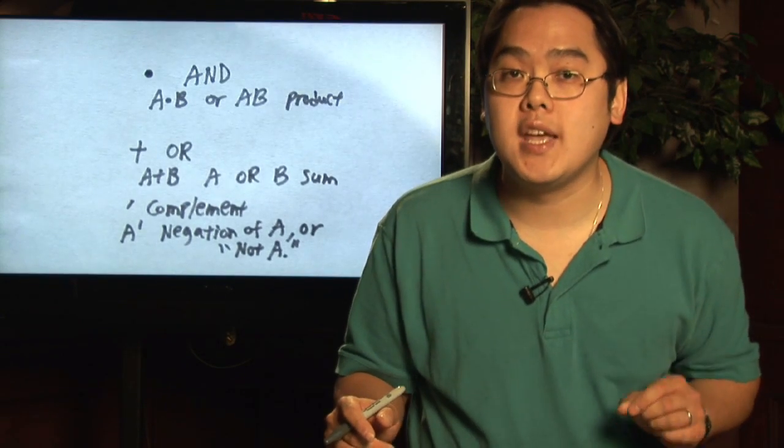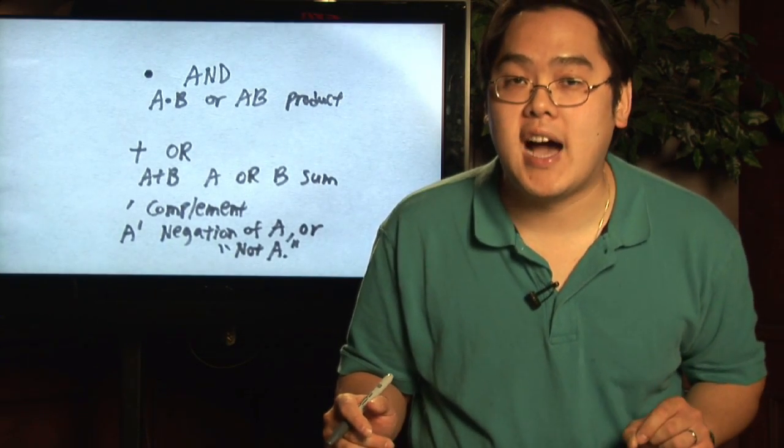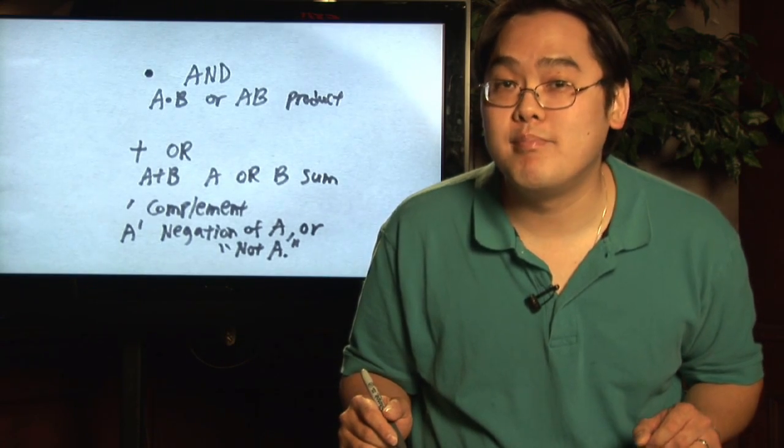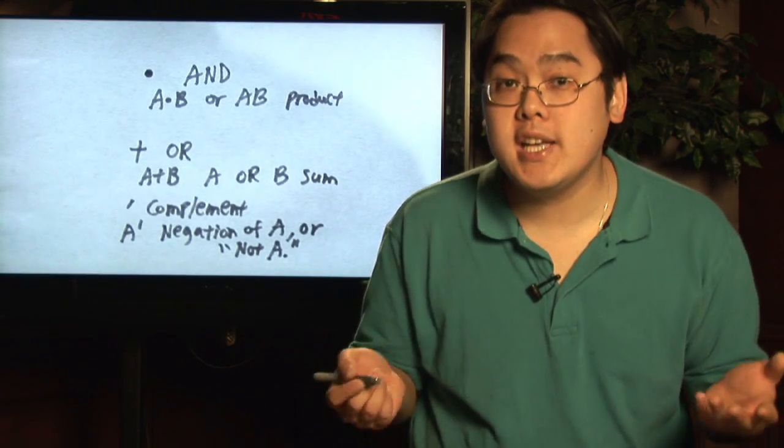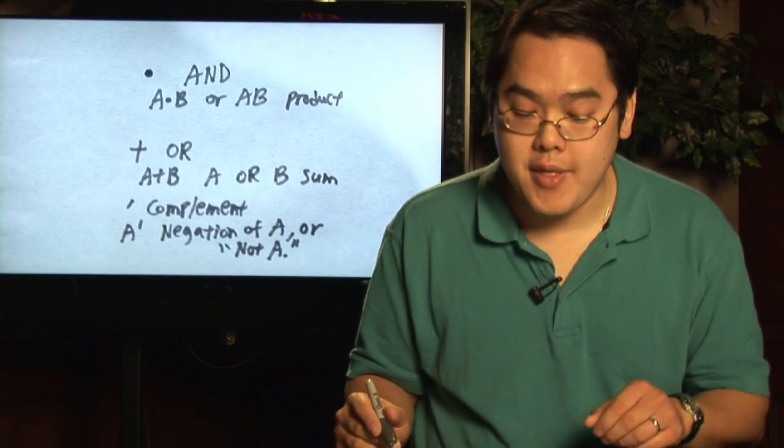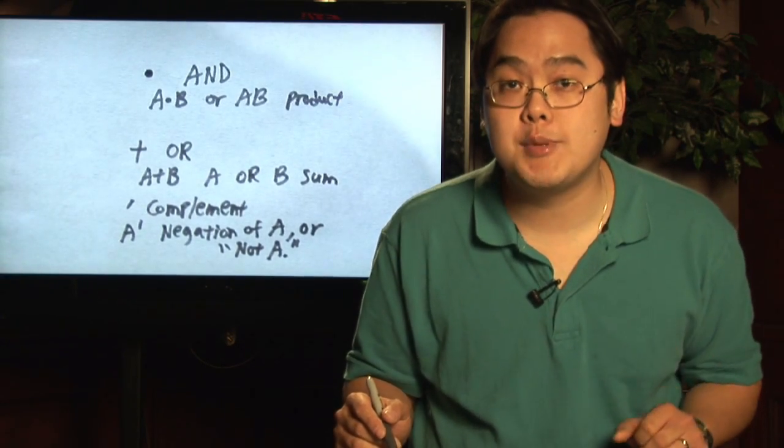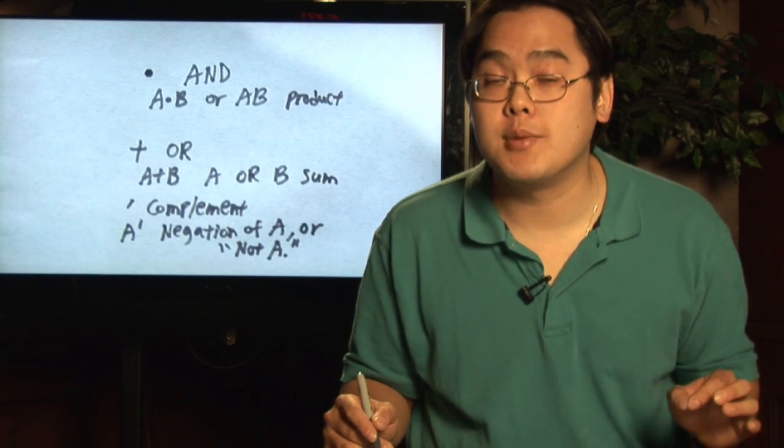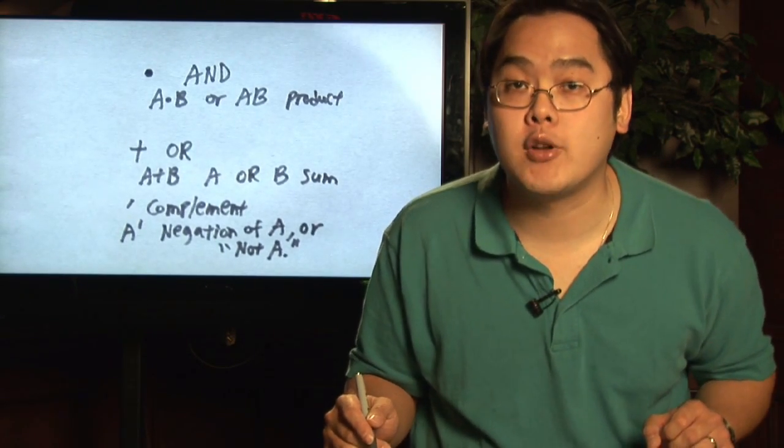Now, first we're going to start off with the closed dot. We've seen this in algebra land as multiplication. Well, it does stand for multiplication here in that it's A dot B or A times B, it stands for product, but it also stands for this word AND. So multiplication symbol here stands for the word AND in Boolean algebra.